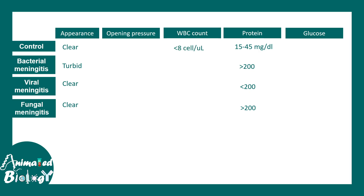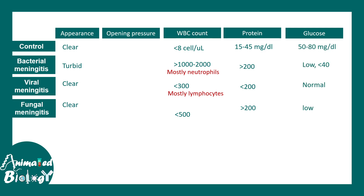Looking at the WBC count: there should be very few WBCs in CSF, so if there are more, it indicates infection. If mostly neutrophils are elevated, it may be bacterial meningitis; if mostly lymphocytes, it may be viral. Glucose utilization is also important — bacteria consume a lot of glucose, so in bacterial meningitis glucose is very low in CSF. Fungal meningitis also shows low glucose. Elevated opening pressure is another factor, most likely indicating bacterial meningitis.